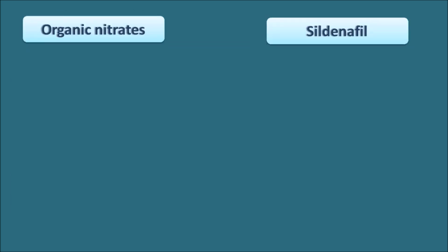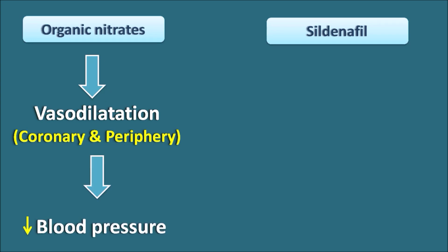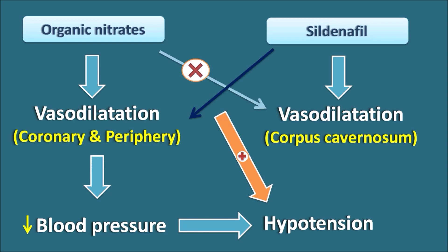Organic nitrates produce coronary vasodilatation as well as peripheral vasodilatation, resulting in decreased blood pressure and hypotension. Similarly, sildenafil can also act as a vasodilator, but it mainly produces vasodilatation within the corpus cavernosum. Organic nitrates do not have direct action on the corpus cavernosum, but sildenafil can show its action on peripheral blood vessels. So when sildenafil is given, it produces peripheral vasodilatation which enhances the vasodilatory response of organic nitrates, producing a more pronounced hypotensive effect.